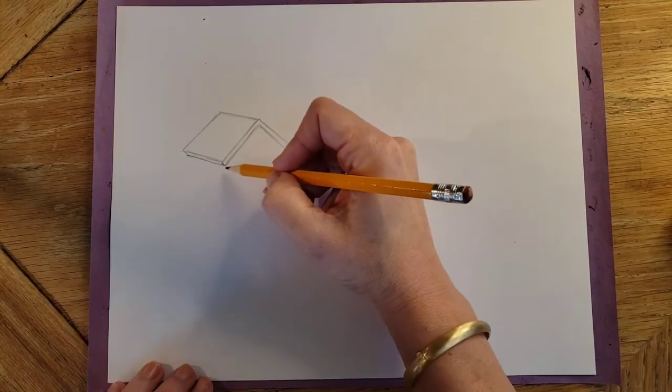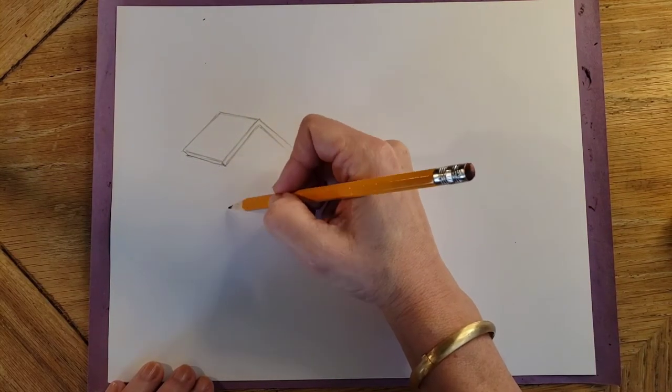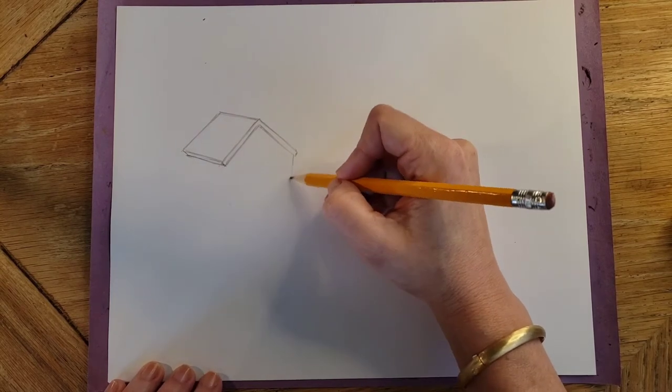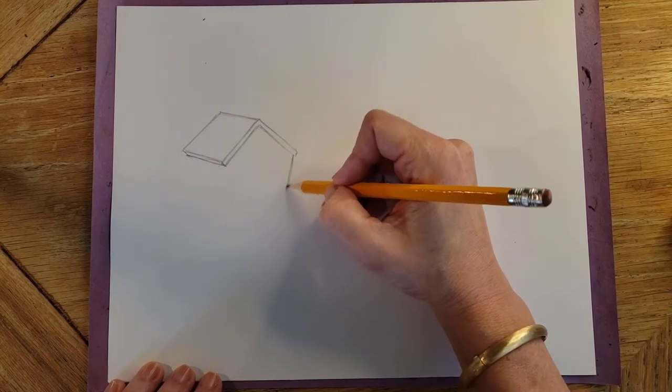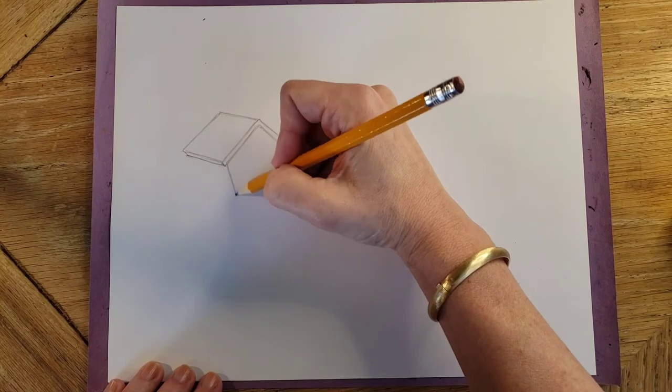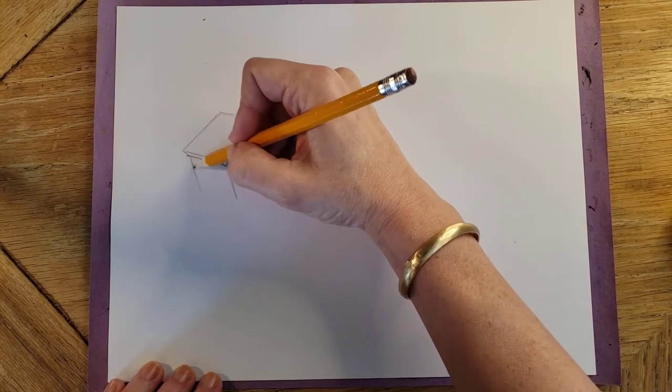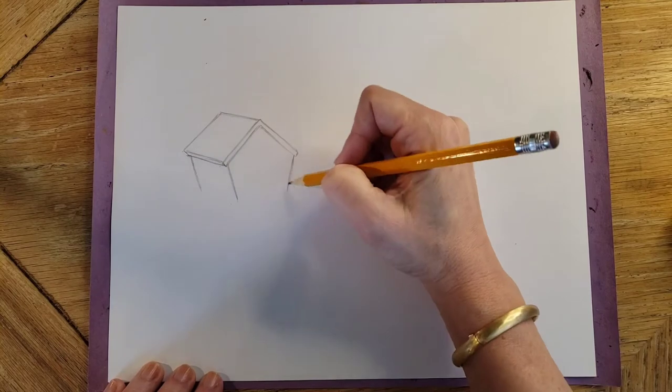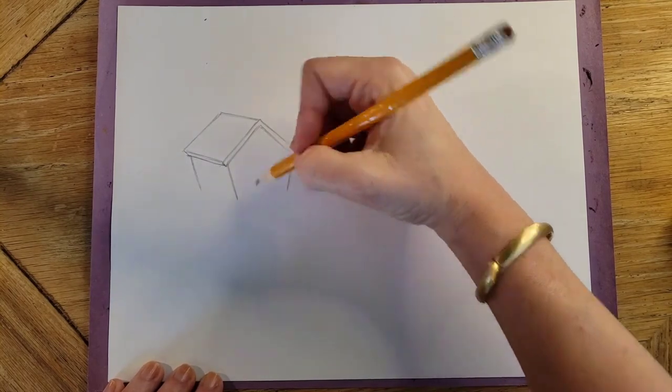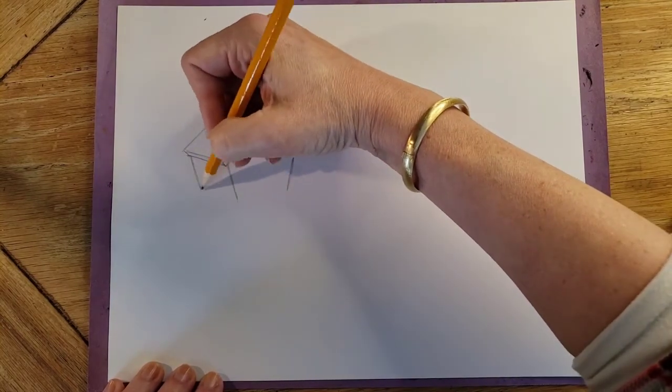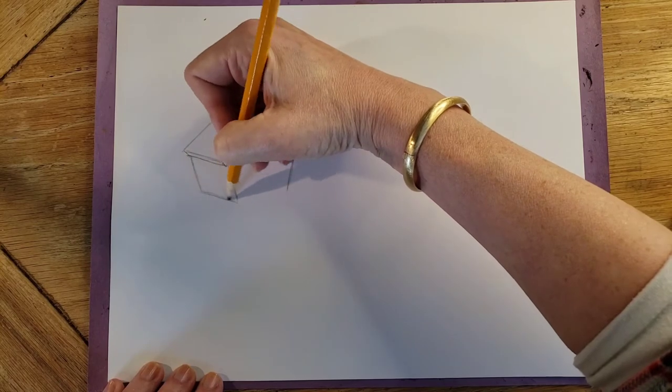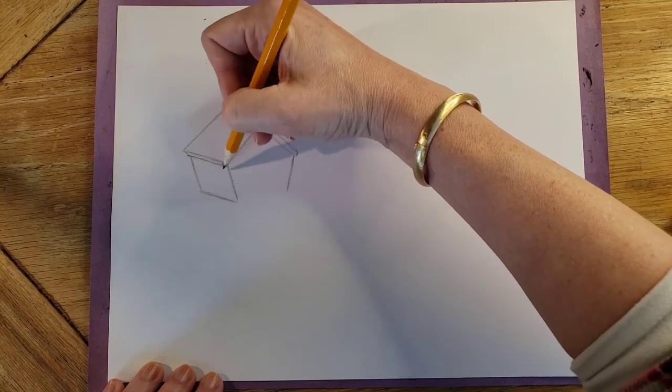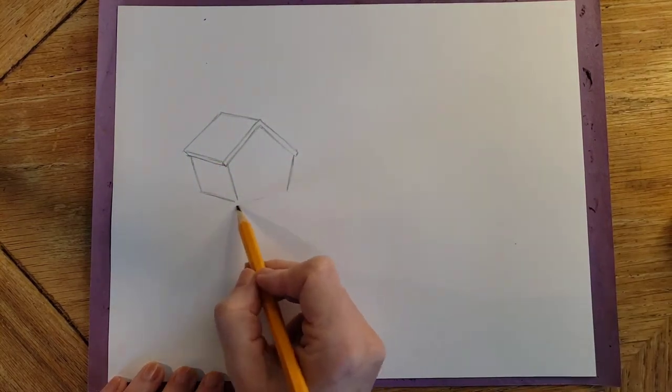Okay, now for the house walls, they could come straight down if you want them to. I'm going to make mine angle in a little bit like this. And then I'm going to have this line, this angle replicated there so that that's parallel. And then across here.